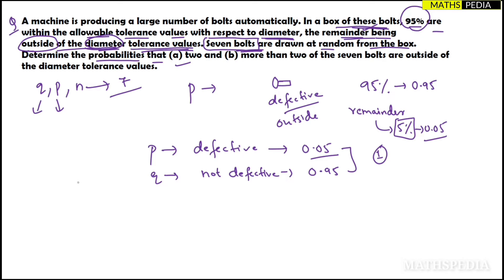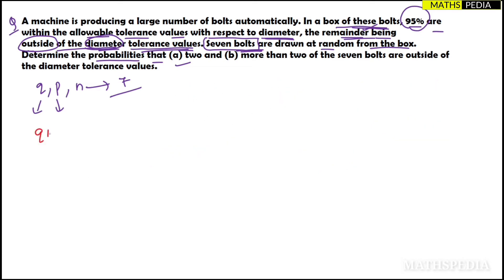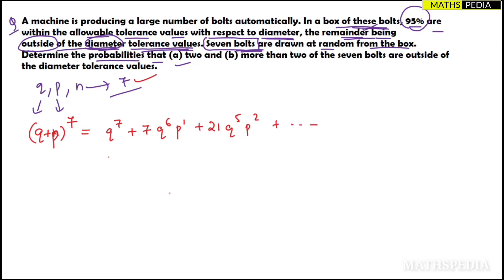Let us now write the expansion of (q + p)^7. That will be: q^7 + 7q^6·p^1 + 21q^5·p^2 + ... and so on. You need to understand each and every term of the expansion to understand what the problem is asking.